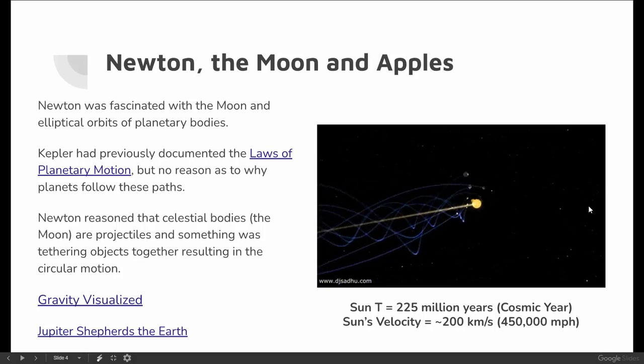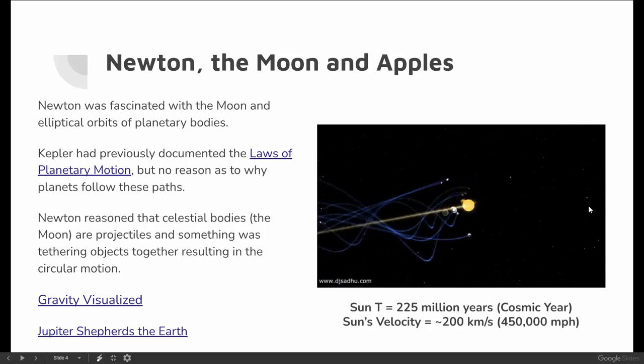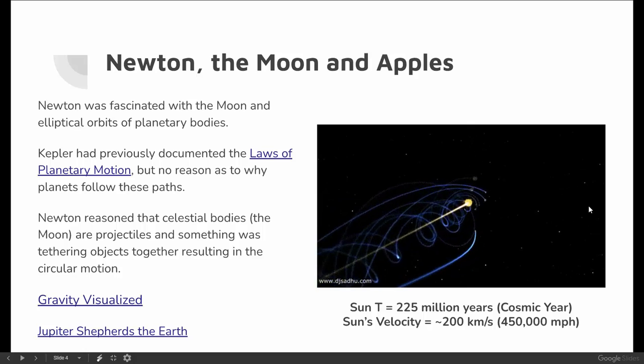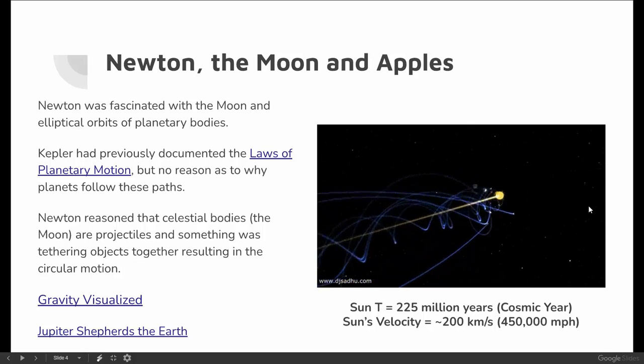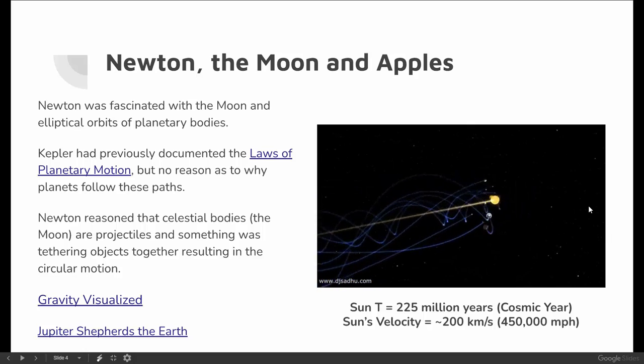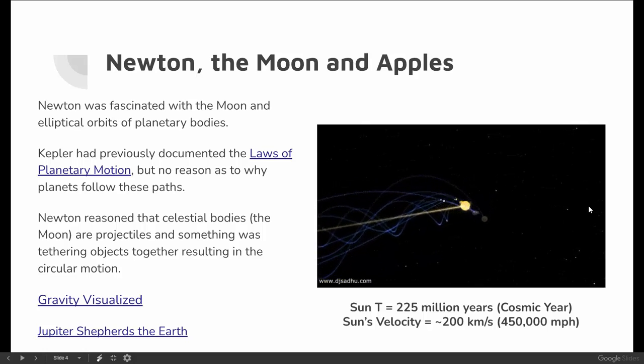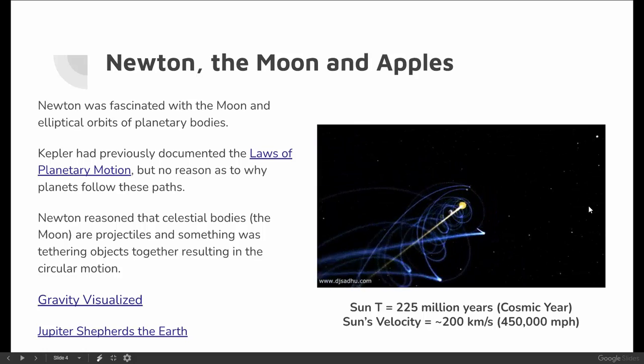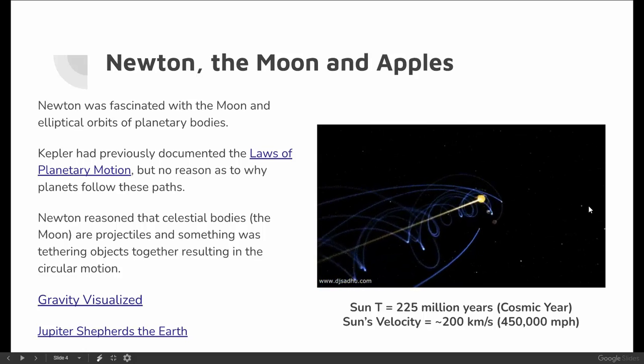He was the first one to make that connection that gravity is universal. That's a pretty big leap. The thing that causes something to fall out of the tree, it's the same thing that causes the sun to orbit the Milky Way galaxy. This talks about Newton's obsession with the moon and other planetary bodies. We're not getting into Kepler's laws of planetary motion.